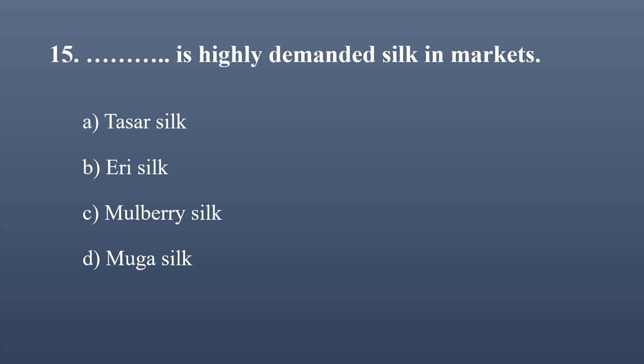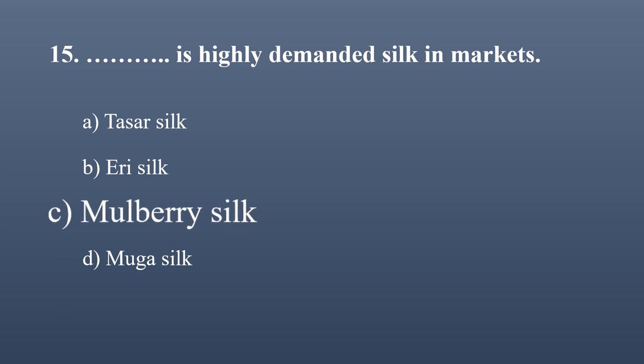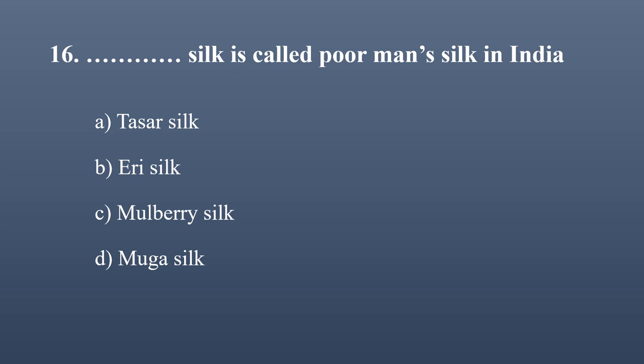Which is the highly demanded silk in the market? Options: Tassar silk, Eri silk, mulberry silk, Muga silk. About 70 to 75 percent of silk is obtained from mulberry silk moth. Mulberry silk is natural, soft, light, and odorless. The correct option is mulberry silk — it is highly demanded in the market.